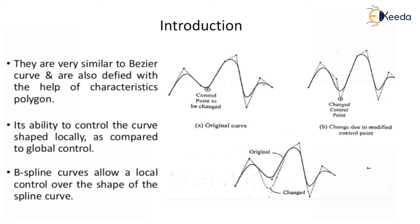B-spline curves allow the local control over the shape of the spline curve. So how is it actually working? In the first figure if you observe, there is an original curve and the shape is shown in the figure where there is one particular control point to be changed and it to be modified the shape of the curvature of the curve.